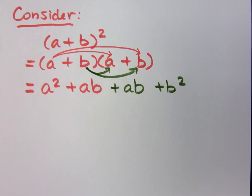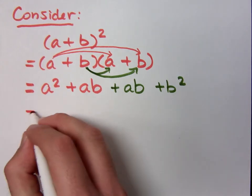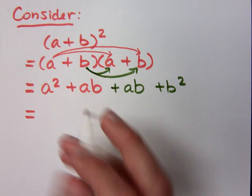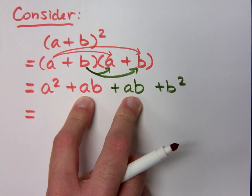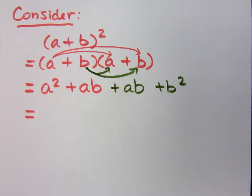Now, is there a way that I can simplify this? Aren't these guys like terms? I mean, they're the exact same term. So it's a squared, plus 2ab.